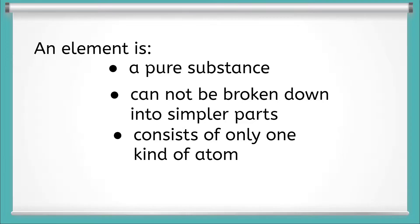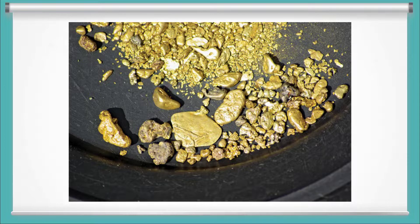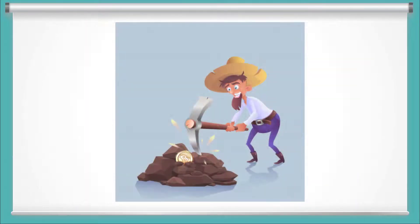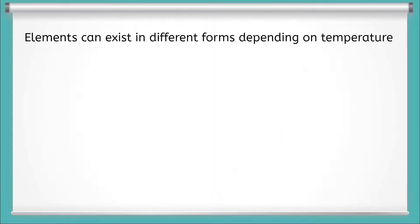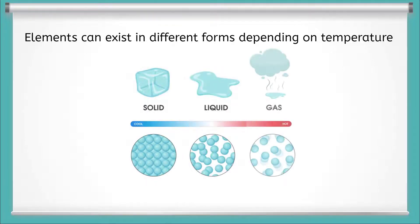For example, the element gold cannot be broken down into anything other than gold. During the California Gold Rush, if a 49er kept striking gold with his pickaxe, the pieces would get smaller, but each piece would always be gold. It's important to note though, that just because elements are all made from the same kind of atoms, they can still exist in different forms. This depends on their temperature, so they could be solid, liquid, or gas.